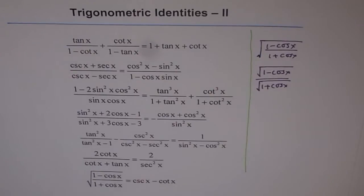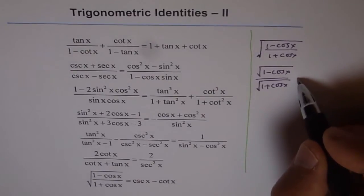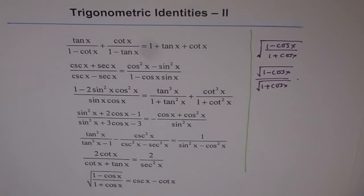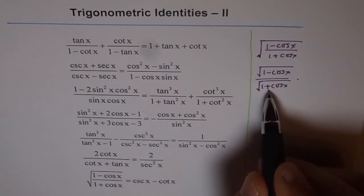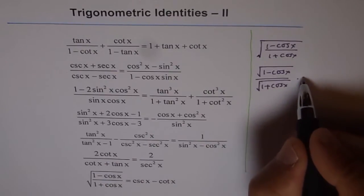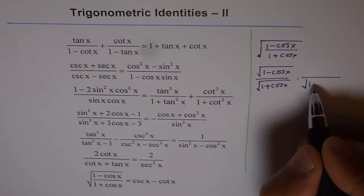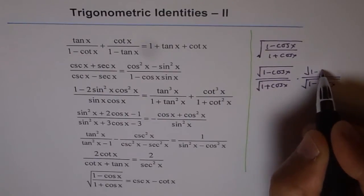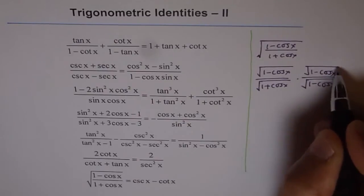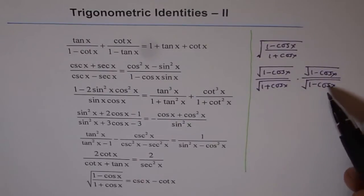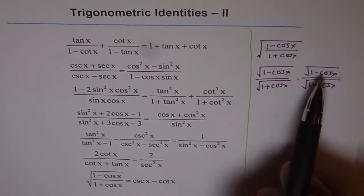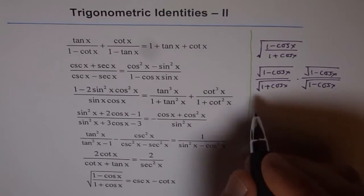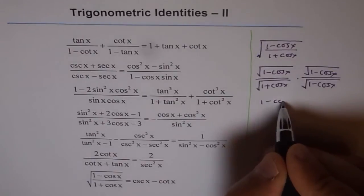Now, here, rationalization means that what we will do here is we will basically multiply by 1 minus cos x square root. So both sides. So that is square root of 1 minus cos x and square root of 1 minus cos x.